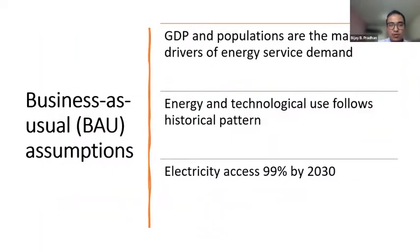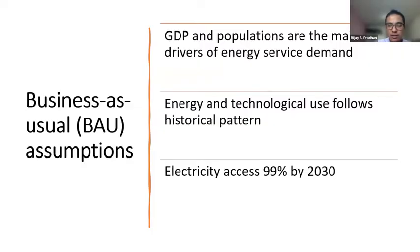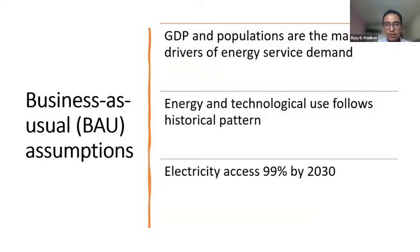For the BAU, we made some assumptions. We assumed that electricity access will increase to 99% by 2030. The energy and technological use will follow historical patterns, and the energy service demand is projected using GDP and population as the main drivers.